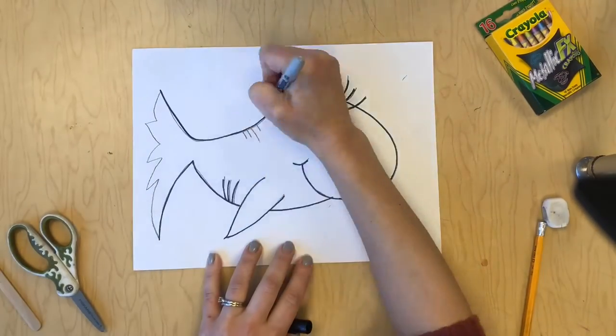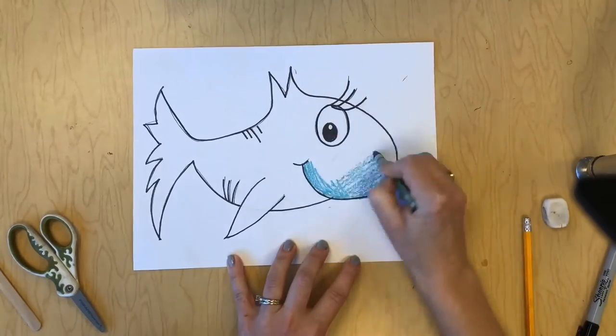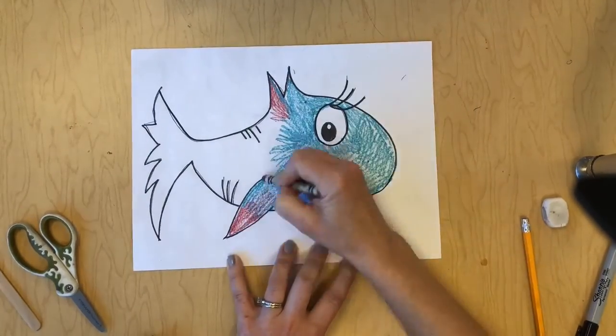If you want to you can outline your fish with sharpie like I'm doing. And then I'm going to use lots of bright colors to color it in.